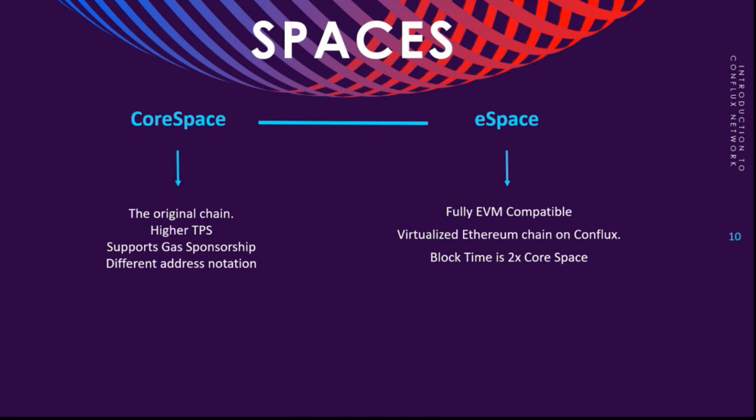This is basically a virtualized Ethereum chain inside of Conflux. The difference here in terms of throughput is that block time is twice as Core Space, so it's lower, but actually it's really fast anyway. And both of them are really cheap in terms of gas fees.